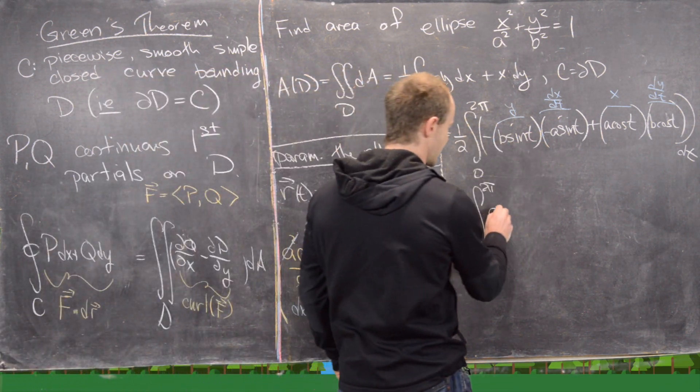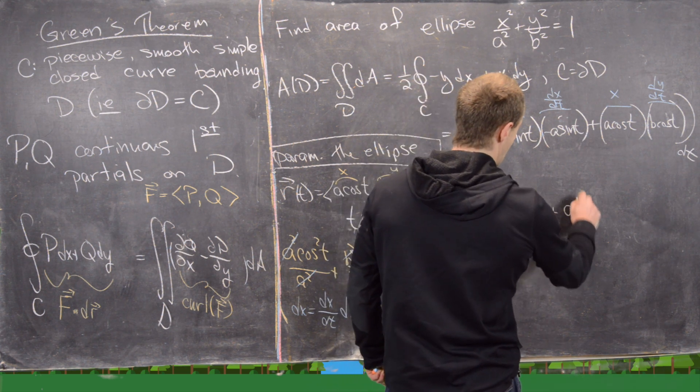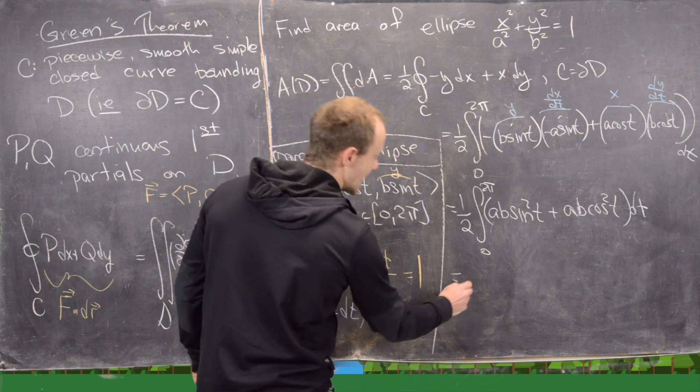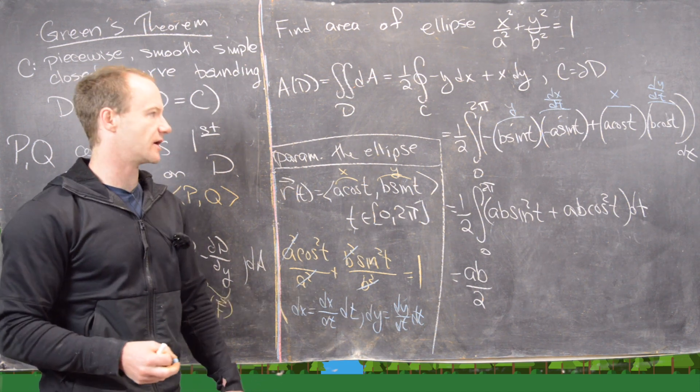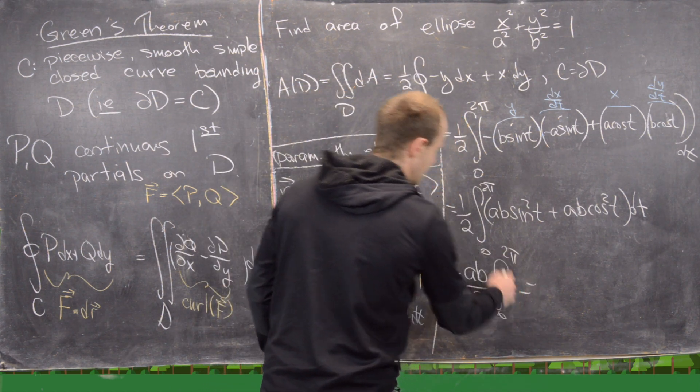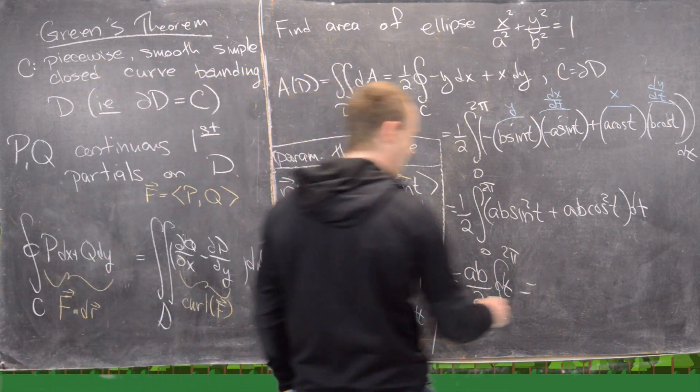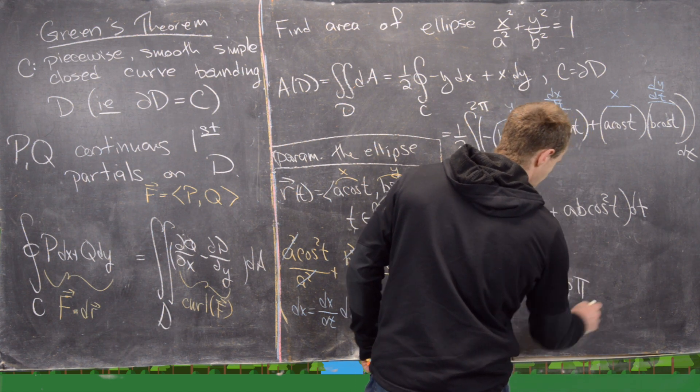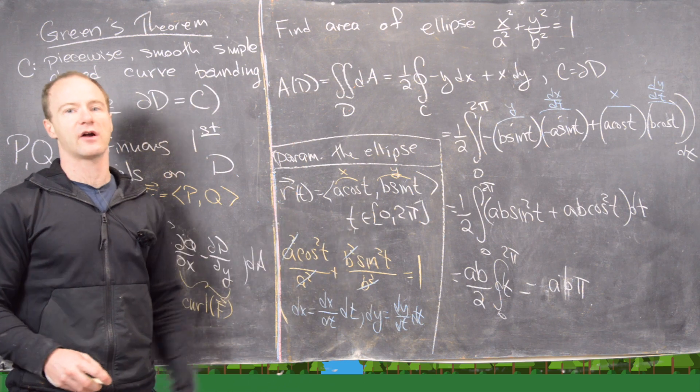Notice I can bring this 1/2 down, this integral from 0 to 2π down. If we multiply these two together, we get ab sin² t, and then plus ab cos² t dt. But notice we can factor an ab out of that. We get ab/2, and then we're left with cos² t + sin² t. But cos² + sin² is just 1, so we get the integral from 0 to 2π, but now of dt. But now that integral from 0 to 2π of just dt is going to be 2π, so that gives us our final answer of a times b times π. So we've got our area of an ellipse via Green's theorem through calculating the line integral.